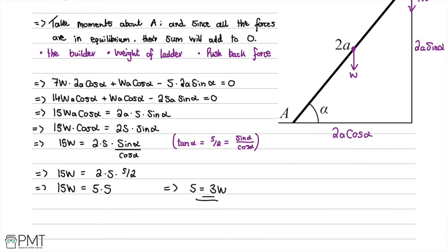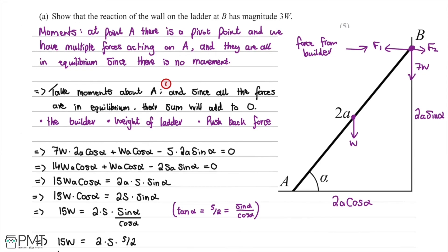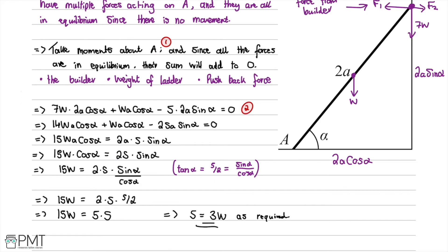This part was worth 5 marks. We achieved the first mark for taking moments about A. The second and third marks came from correctly writing the moment expression: 7w times 2a cos(alpha) plus the remaining terms. The fourth mark came from substituting tan(alpha) for sin(alpha)/cos(alpha), and the fifth and final mark for concluding with the required answer of 3w.